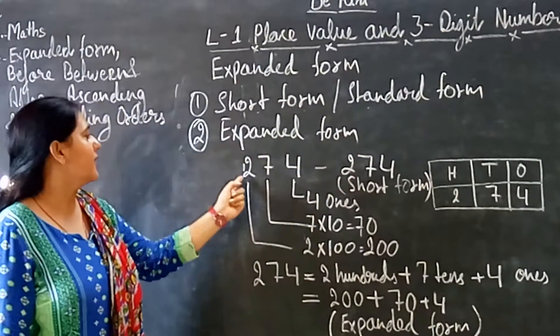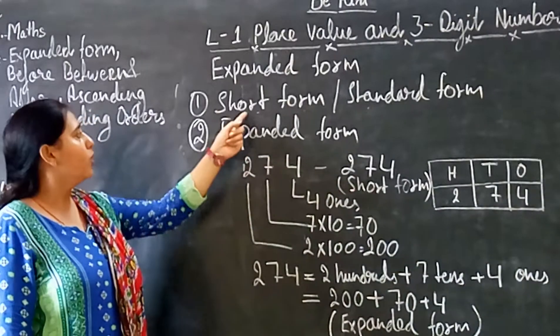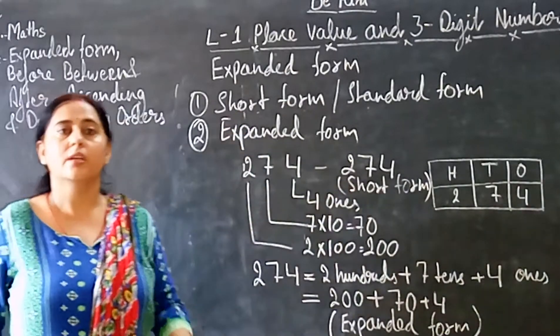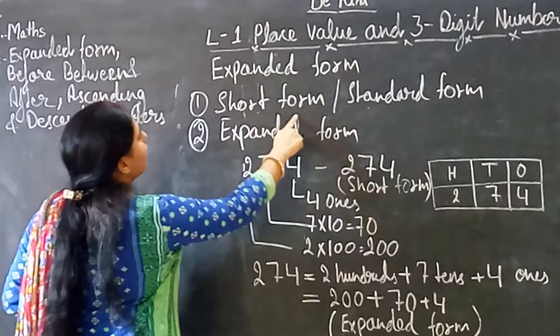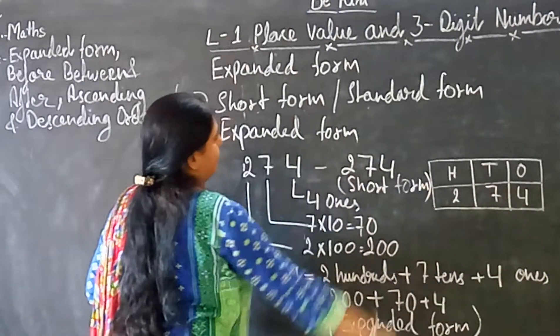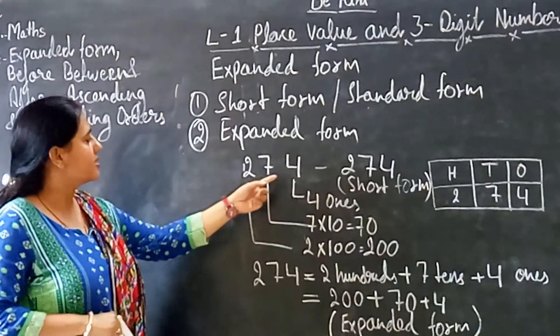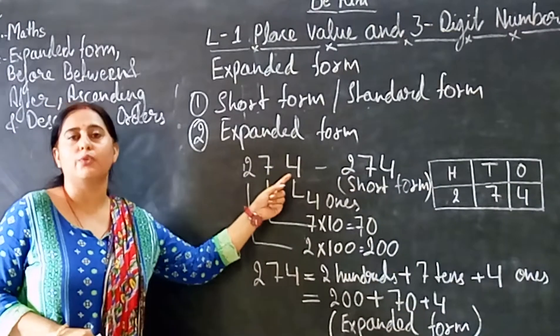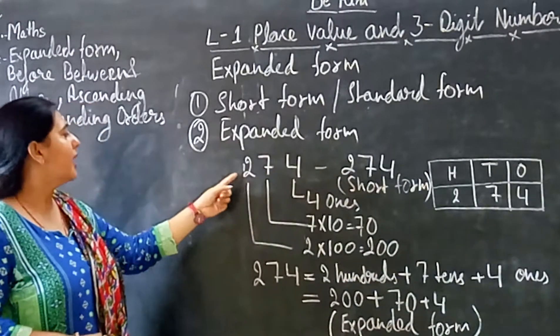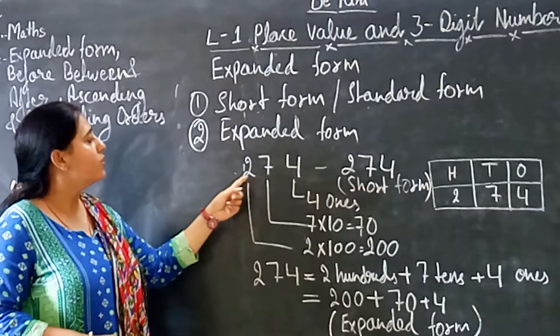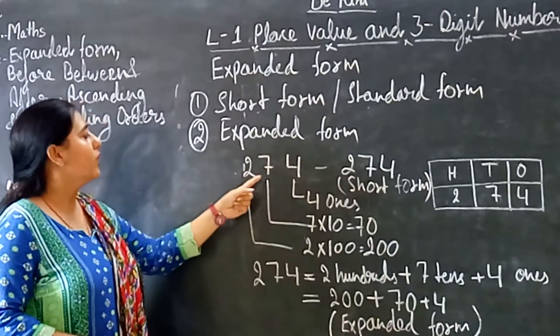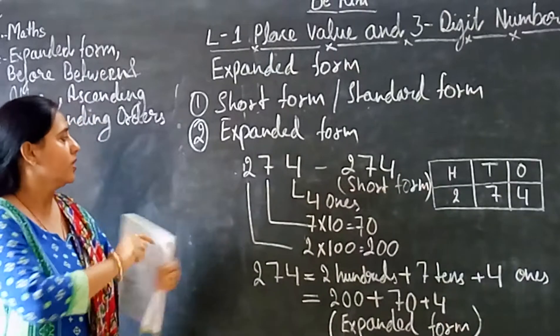Now I am taking an example to explain both the forms, how to write number in short form or in expanded form. Let's take a 3 digit number, 274. What I have written here? 274.